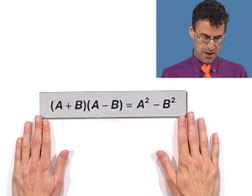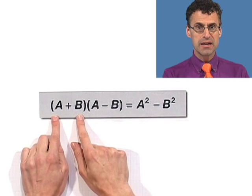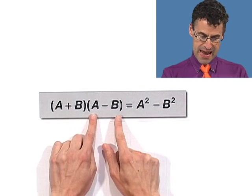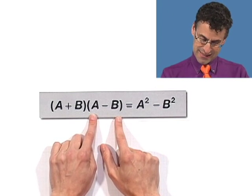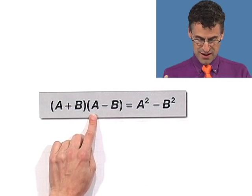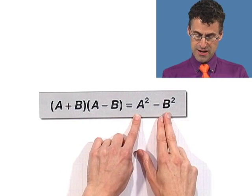I want to start with a real famous one, probably my favorite actually: what happens if you multiply a plus b times a minus b? I just know this one. I've done it so often. It's the difference of the squares, a squared minus b squared.